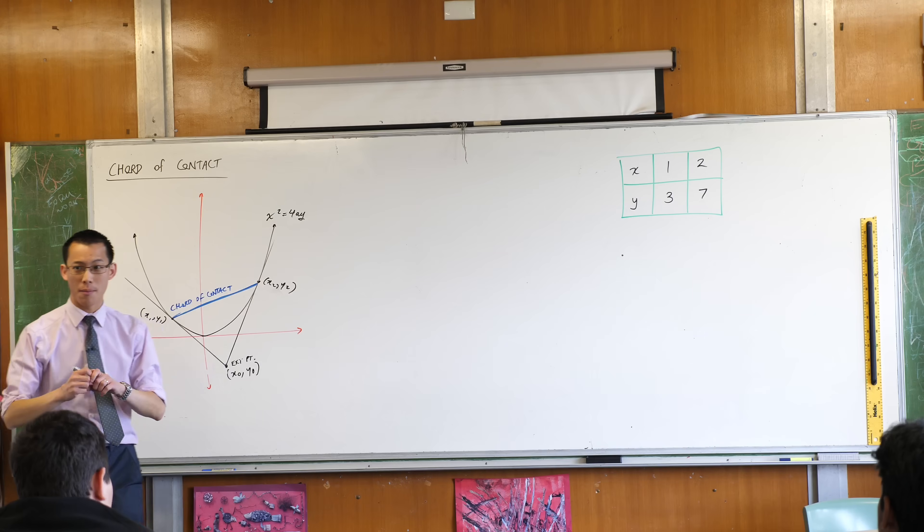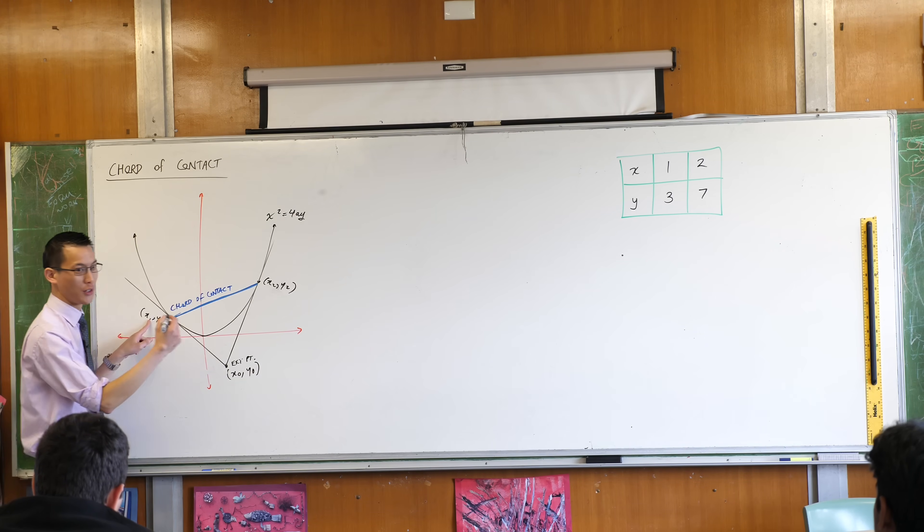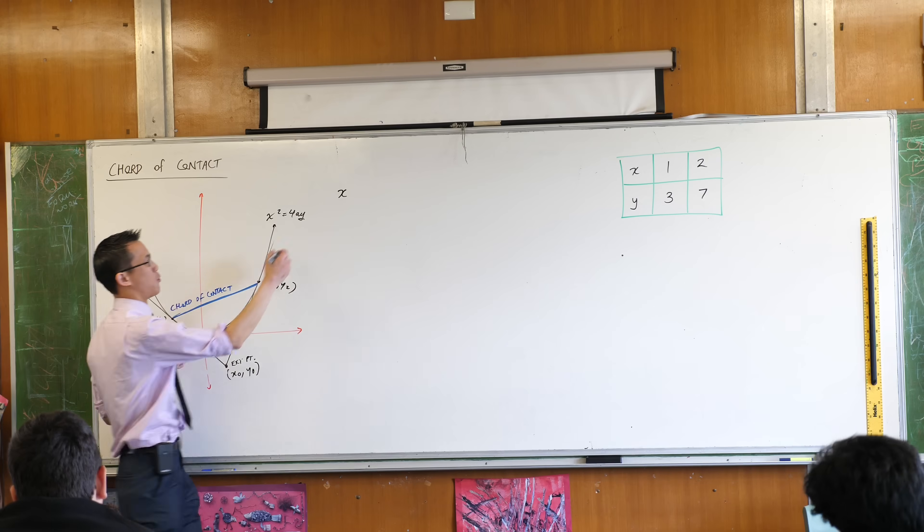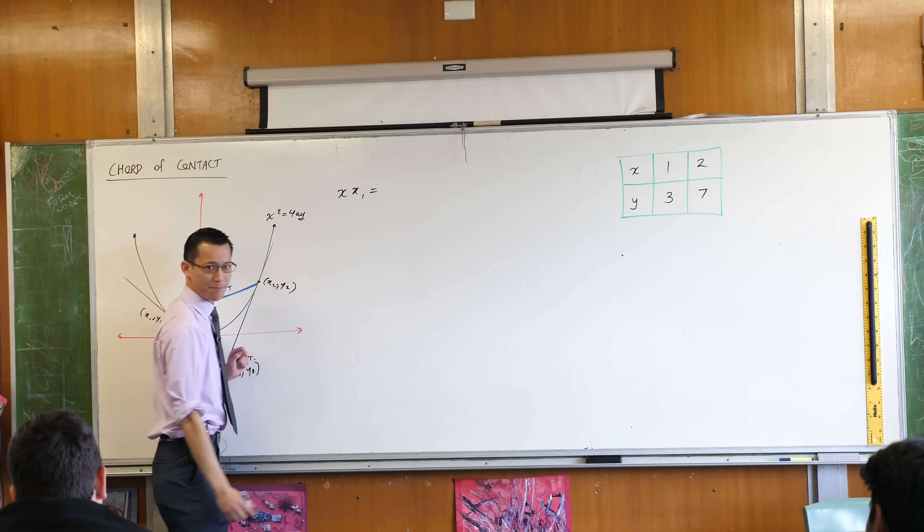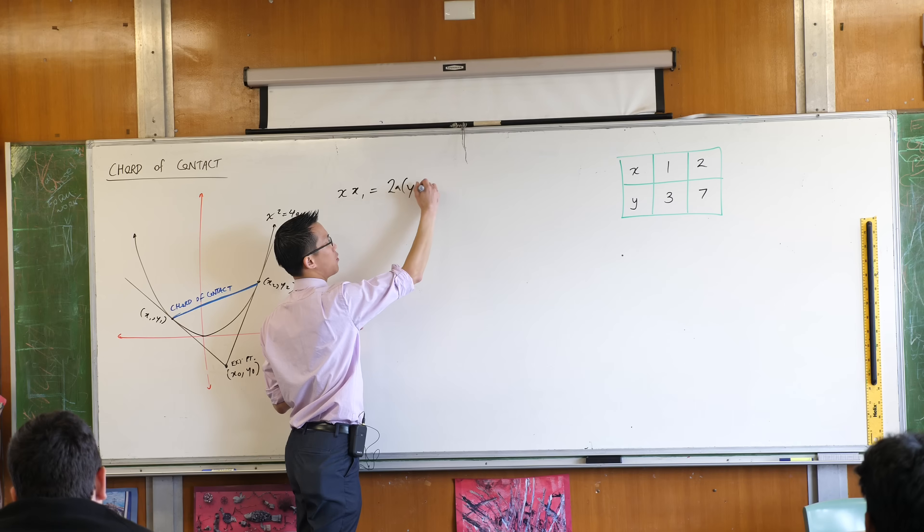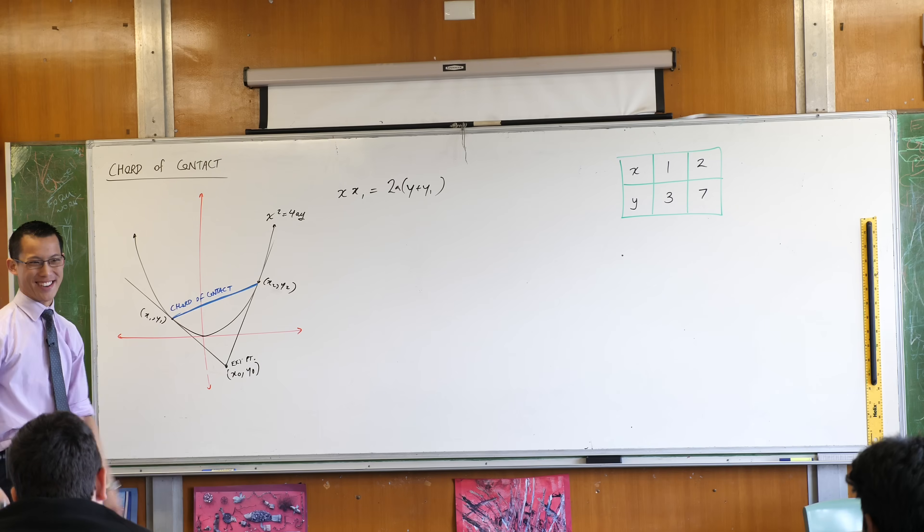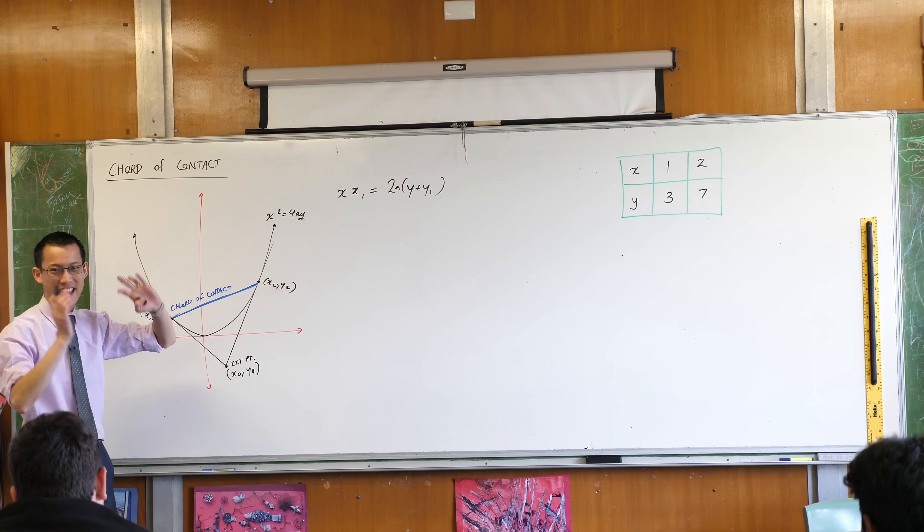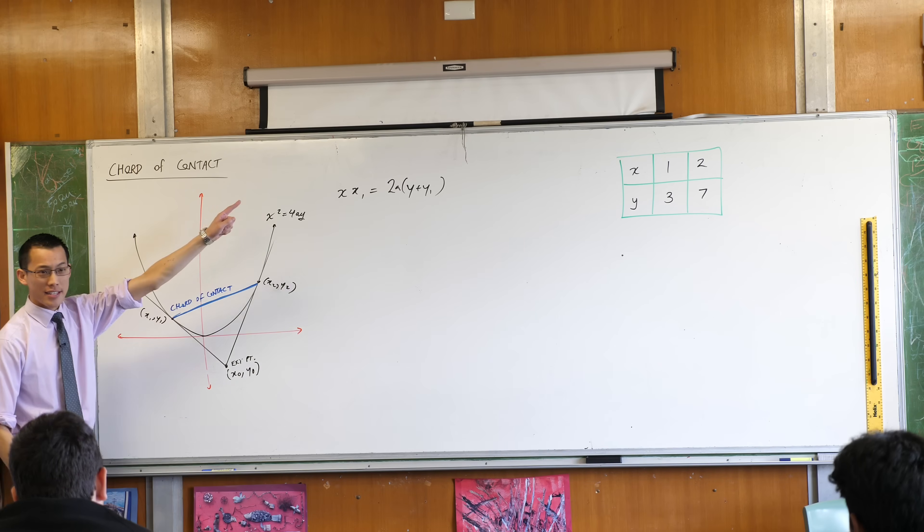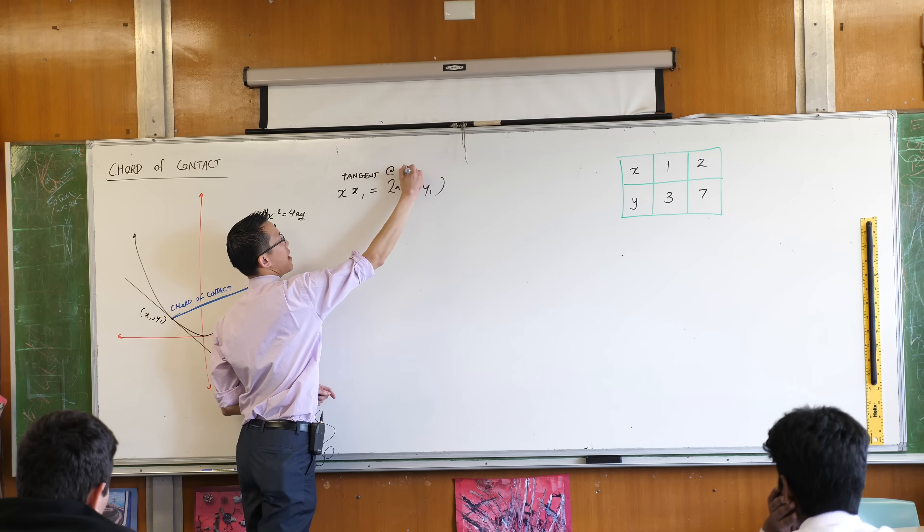What is the equation of a tangent to a parabola, a point on a parabola like this? I'll give you a clue. It starts with an x. In this case, xx1 equals what? Very good. a times y plus y1. It's actually a really simple formula, right? It's like, wow. Look, Ma, no reference sheet. You've already gotten a sense of what it is. Even if maybe under exam conditions, you're not quite there yet, which is why we give you a reference sheet.